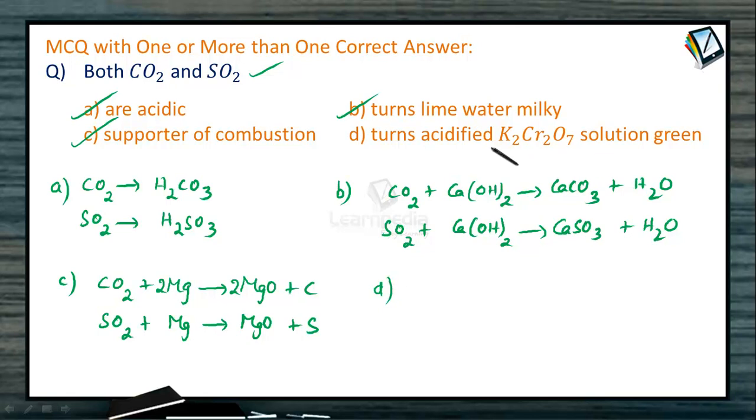For this one, only sulfur dioxide can do this but not carbon dioxide. There is no reaction between carbon dioxide and acidified K2Cr2O7.